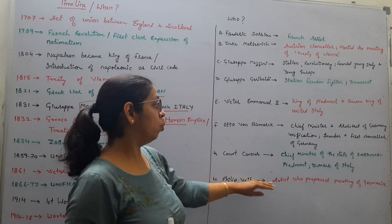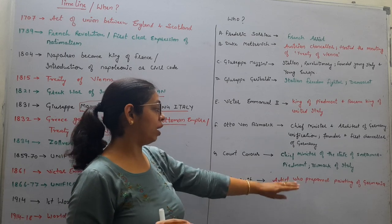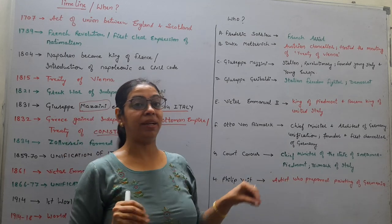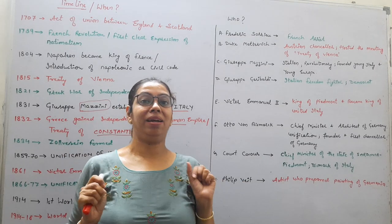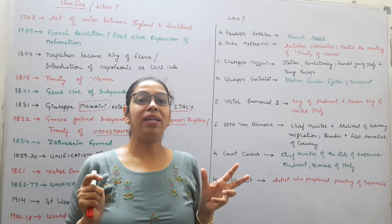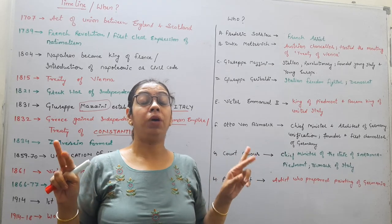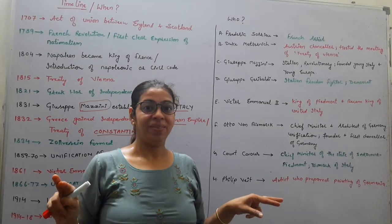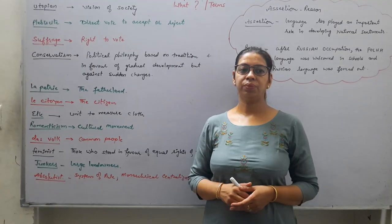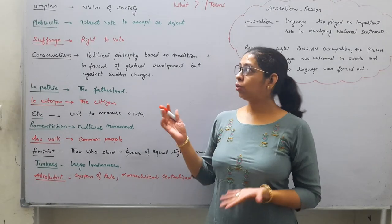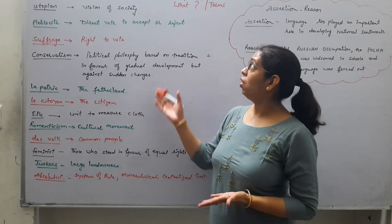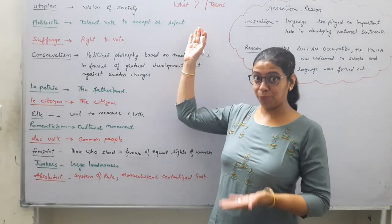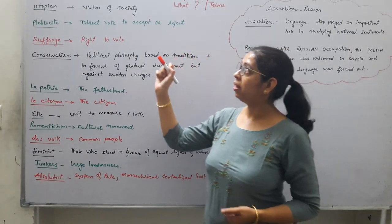Philip Veit was the artist who prepared the famous painting of Germania. Germania is a female figure. Now let's cover 'what' or terms-type questions.